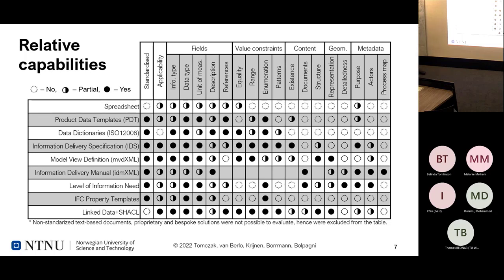For some interesting comparisons: all methods we found are possible to be machine readable so we can parse them, but not all of them are machine interpretable — meaning the machine can check if a requirement is fulfilled. Those found best for machine validation are IDS and linked data, shown with black dots. We also found partial capability for site validation in NVD and data dictionaries. To ask for additional documents or drawings, only IDM and level of information needs support this. For geometry, IDM, level of information needs, NVD, and linked data also have this capability.